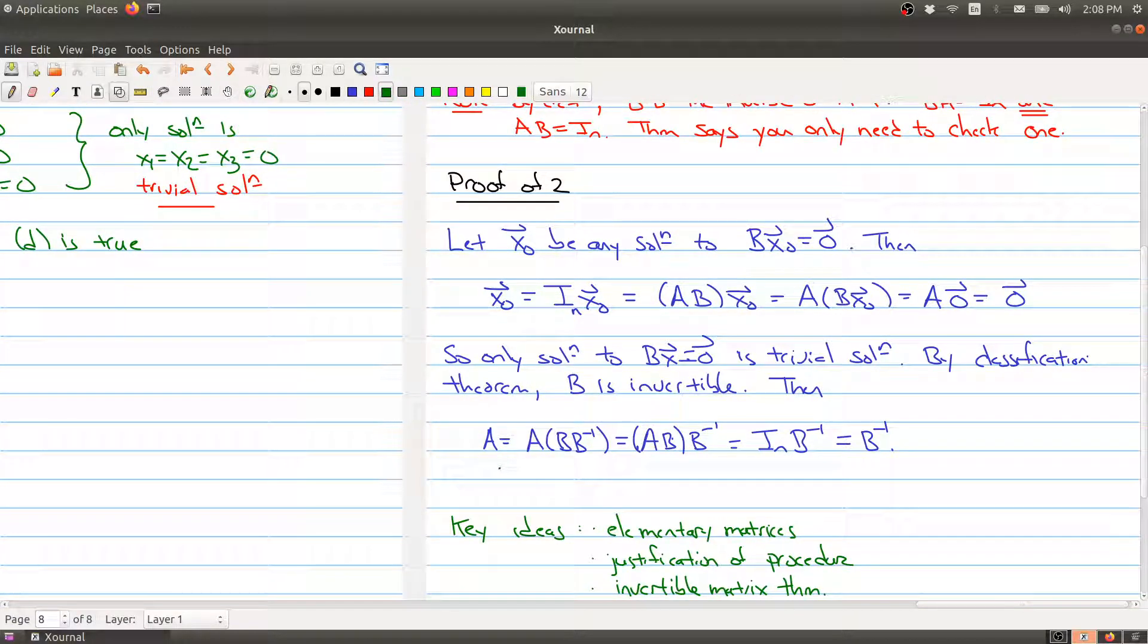So to wrap things up here, we get that A is equal to B inverse, which is the same thing as saying that A inverse is equal to B inverse inverse, which is equal to B, which is exactly what we wanted to prove. And part one, a proof of part one, is actually the same.